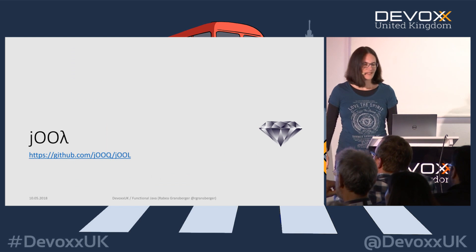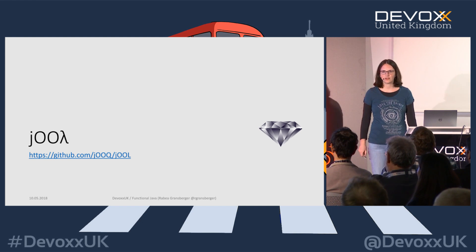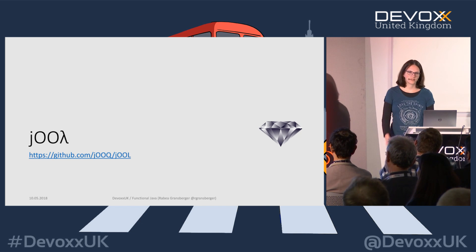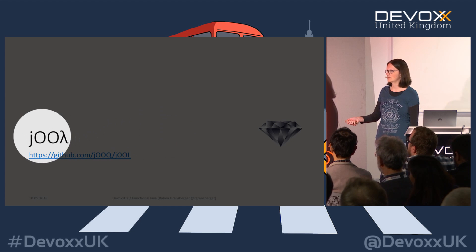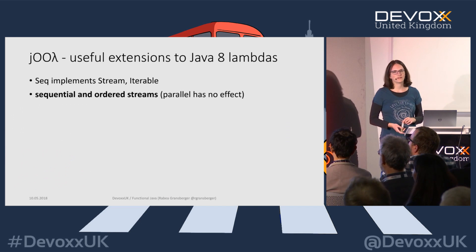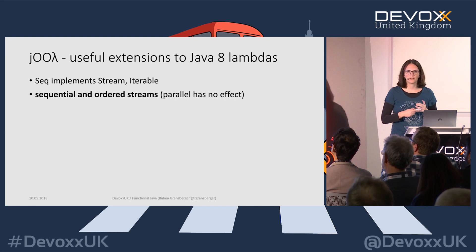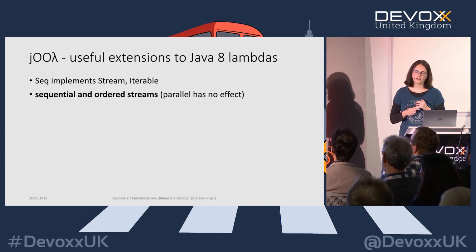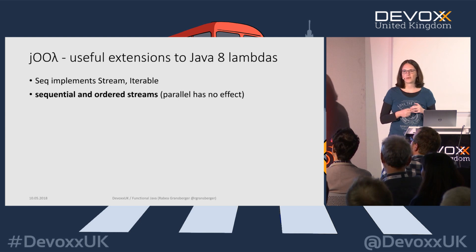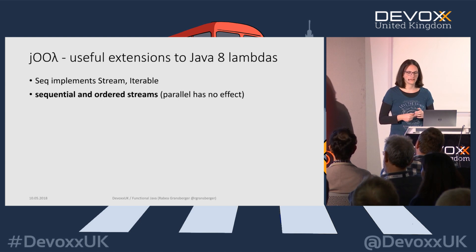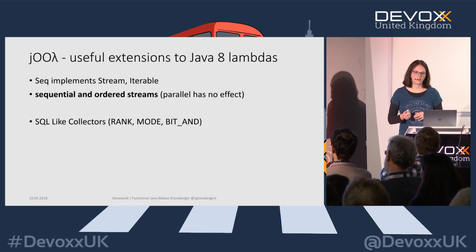Let's look at another library called jOOL. You might know jOOQ — jOOL is a sibling of jOOQ for having type-safe SQL queries. jOOL has what they call useful extensions to Java 8 lambdas. They've extended the stream with a class called `Seq` (sequence), which also implements `Iterable` (which `Stream` doesn't), so you can iterate over sequences. They are always sequential — calling `parallel()` is implemented because it extends `Stream`, but it has no effect. It also has SQL-like collectors which are very convenient.